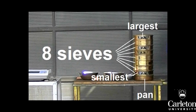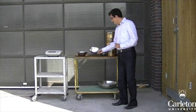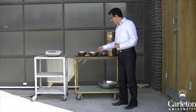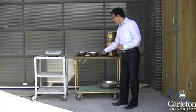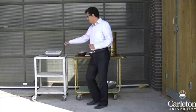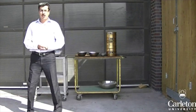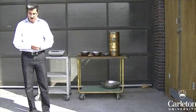Make sure that the sieves you are using are in order from largest at the top to smallest at the bottom. You will also need a few containers, such as these bowls, and a scale. Finally, you will need a shaker such as this one.